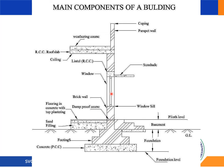In framed structures, RCC columns are vertical members constructed to support the structural frame. The load from slab and beam is transferred to the column, which then transfers loads to the footings safely. There are two types of columns: architectural columns, used to enhance aesthetic appearance, and structural columns, which carry the building load to the ground. The minimum dimension for a structural column is 230 mm.